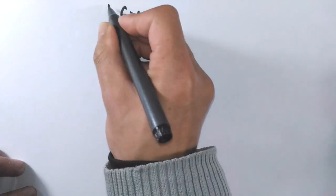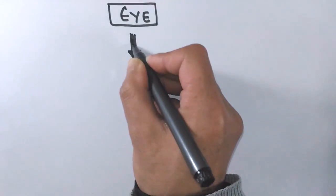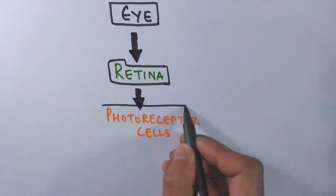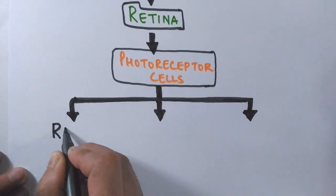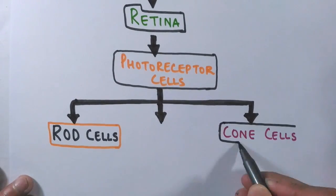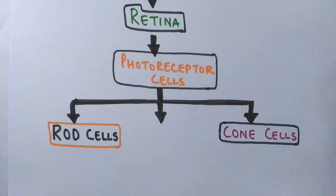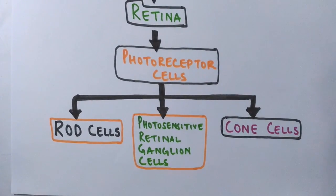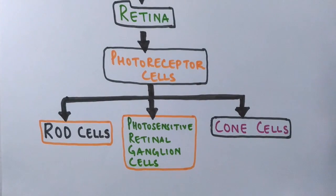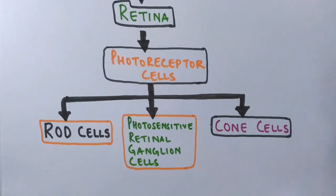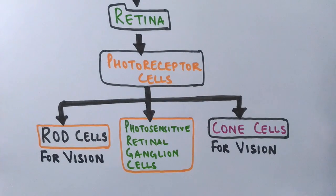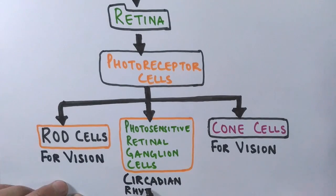When we break it down, the eye has a retina layer, and the retina layer has photoreceptor cells of two main types: rod cells and cone cells. There is another type called photosensitive retinal ganglion cells, which are also part of the photoreceptor family. However, the main ones used for vision are rod cells and cone cells, whereas photosensitive retinal ganglion cells are used in circadian rhythms in mammals.